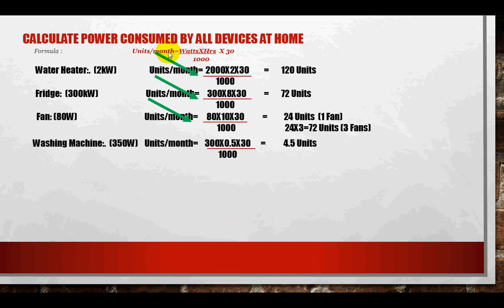Similarly, the washing machine operates at 300 watts and is on for 1.5 hours per day. Over 30 days that gives 4.5 units. The effective usage is 1.5 hours because the washing machine consumes power only when it is running, and in all other cases it is off.